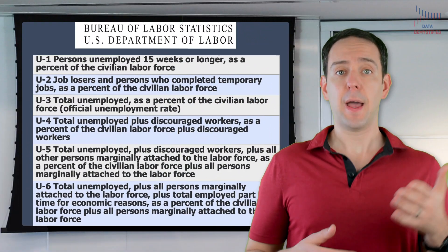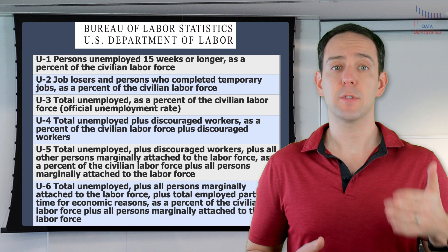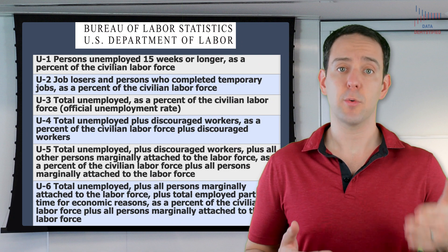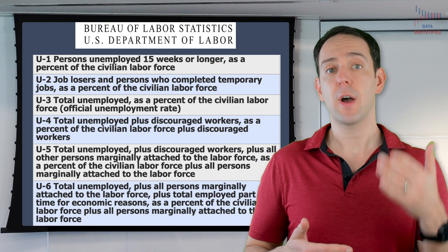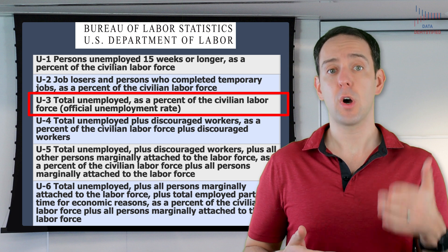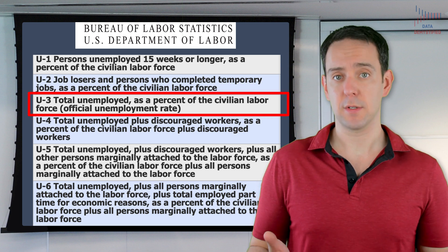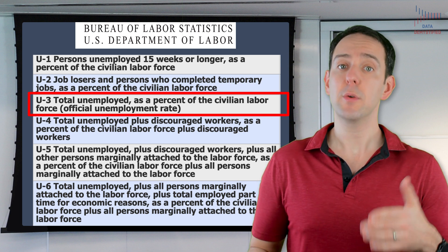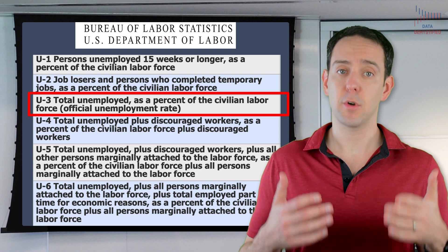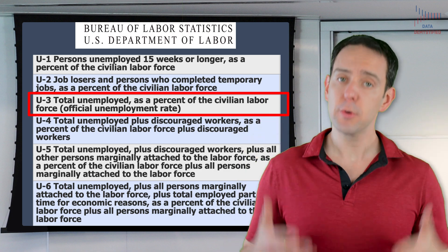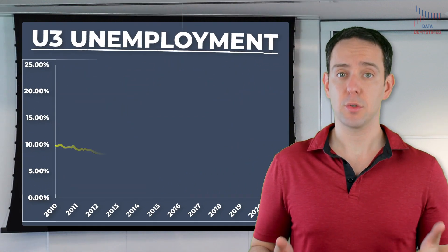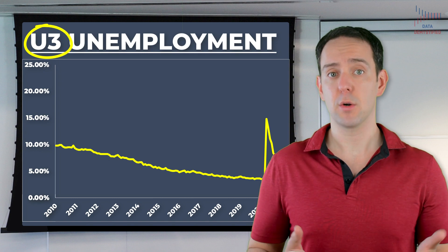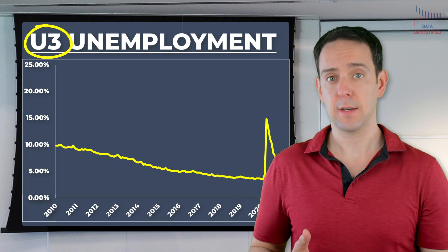After they conduct that survey, the Bureau of Labor and Statistics actually reports a bunch of different measures of unemployment. The most common of these measures is what they call the U3 unemployment rate. Whenever you hear someone in the news talk about unemployment, it is almost always this number. That graph I showed you is the U3 unemployment rate over the last decade. But what the heck is a U3 rate?